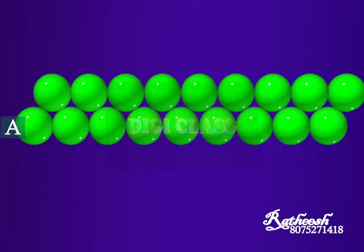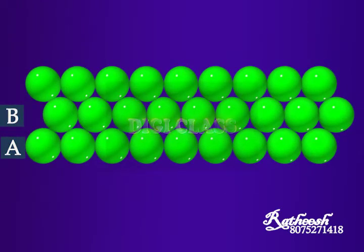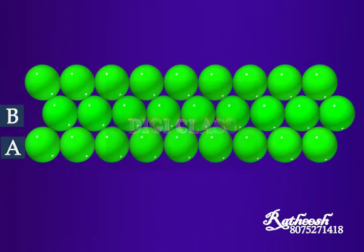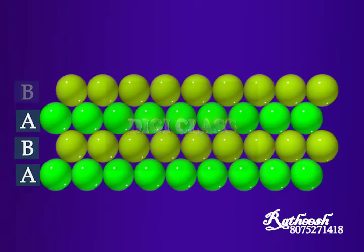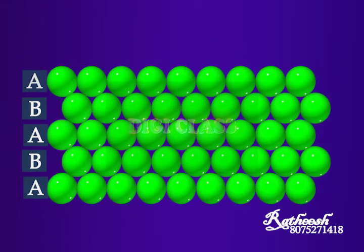The second row is not similar to the first row and can be named B type. The third row can be placed in the depression of the second row, which aligns with the spheres of the first row and can also be named as A type. Similarly, the spheres of the fourth row align with the spheres of the second row and can be named as B type.